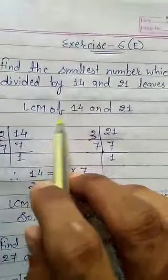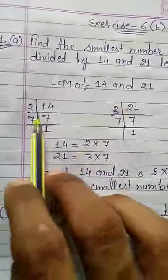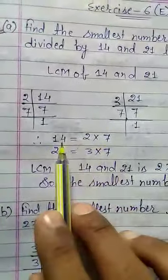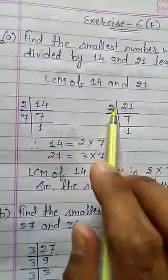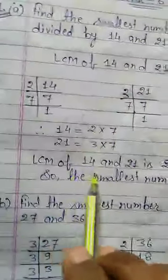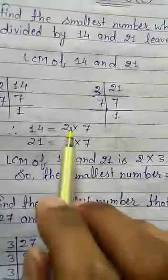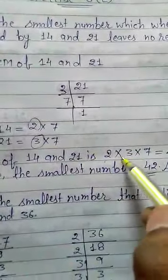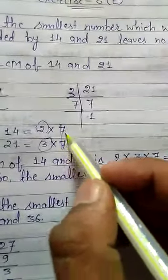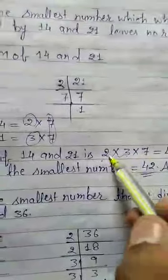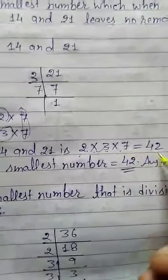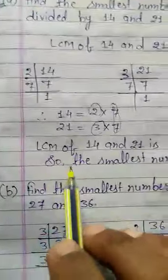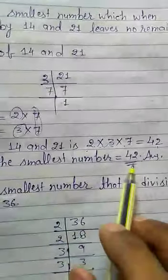You will write the question, then LCM of 14 and 21. We will find out the factors of 14 and 21. 14 equals 2 multiplied by 7, and 21 equals 3 multiplied by 7. Now LCM of 14 and 21: 2 is single so we take 2, 3 is single so we take 3, 7 is a pair so we take one 7. 2 × 3 = 6, 6 × 7 = 42. So 42 will be the LCM. The smallest number equals 42. This is the answer.